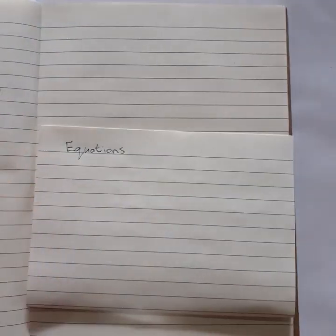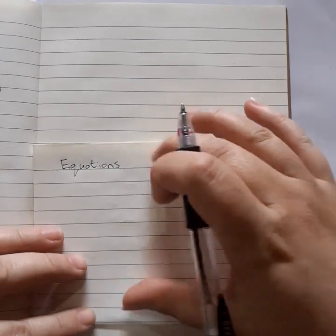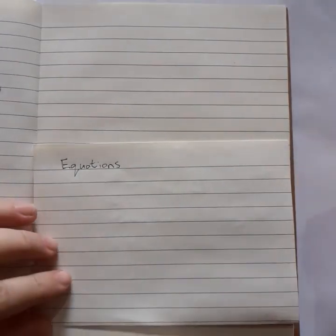So, with equations, or gelijkings, we don't know what the variable is. A variable is something that we don't know the value of, and it can take any value.